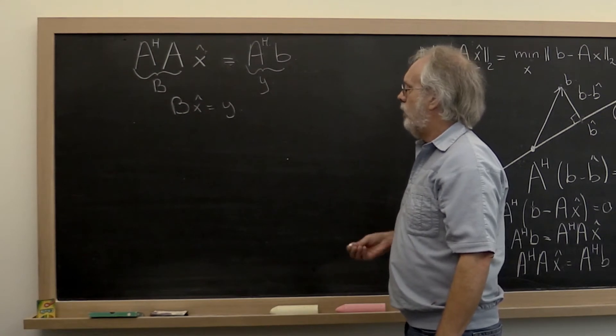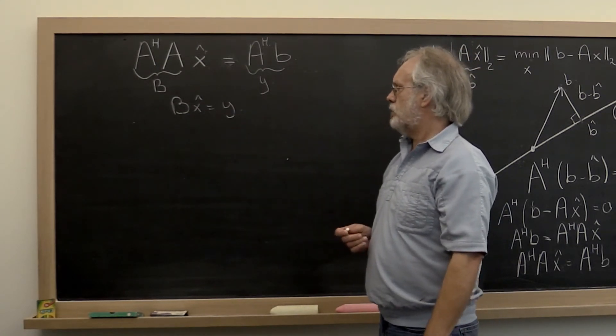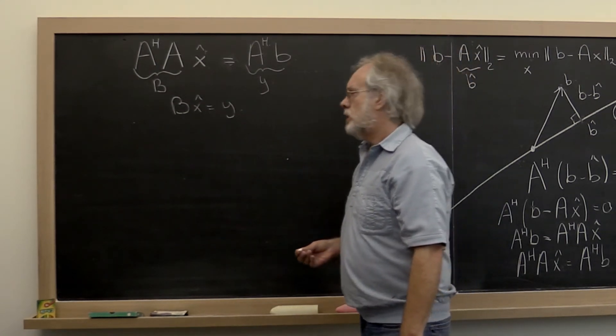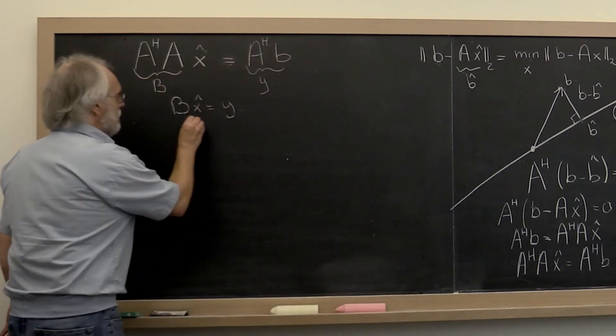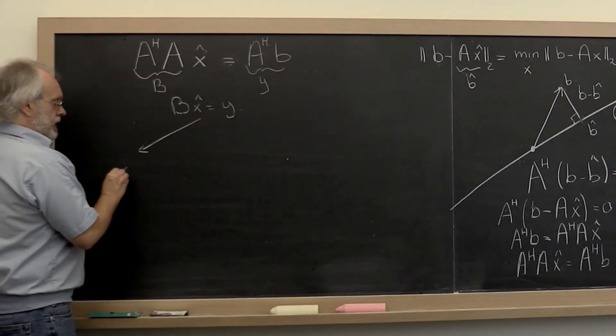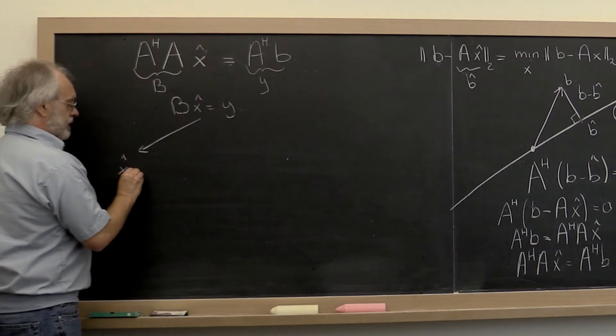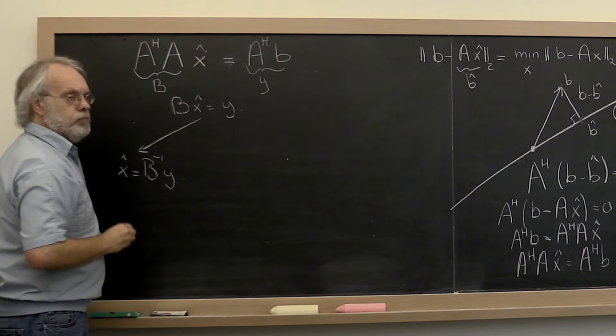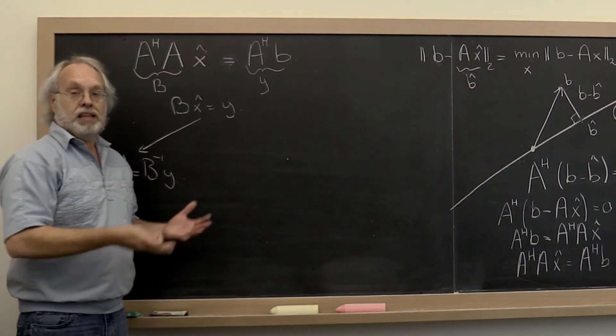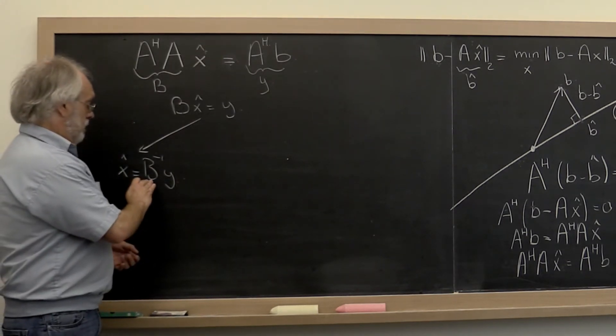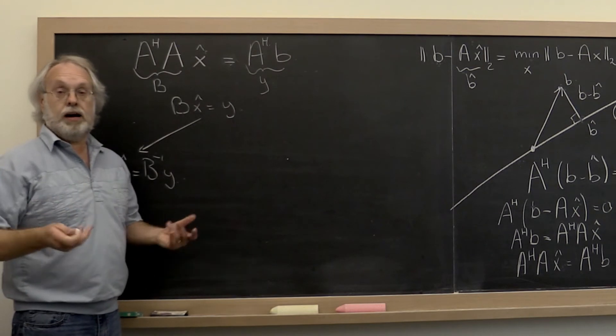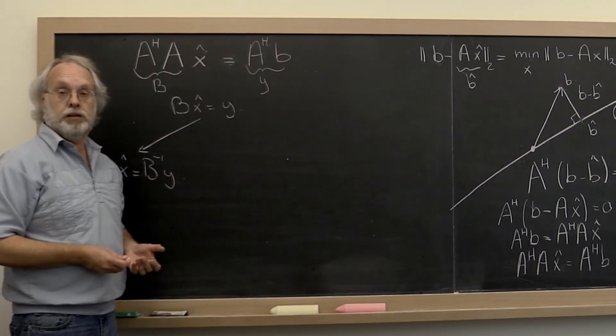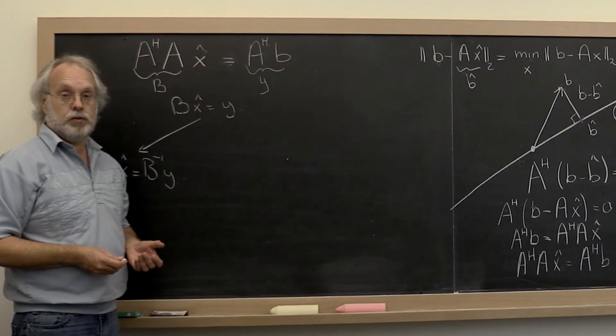Now the question becomes how do we solve this? Well, one way to say, mathematically this is the same as computing x hat is equal to B inverse times y. Well mathematically that's all very nice, but we don't know yet in this course how to compute the inverse. You may have been taught how to compute the inverse of the matrix in some other course.